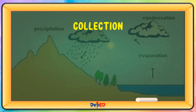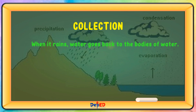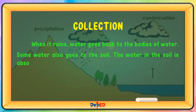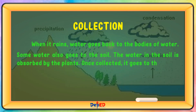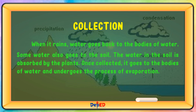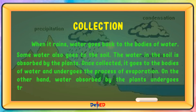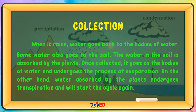Collection: When it rains, water goes back to the bodies of water. Some water also goes to the soil and is absorbed by plants. Once collected, it goes to bodies of water and undergoes evaporation again. Water absorbed by plants undergoes transpiration and starts the cycle again.